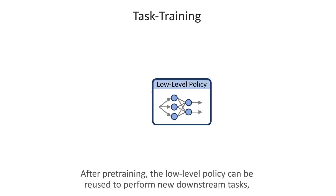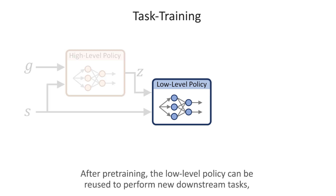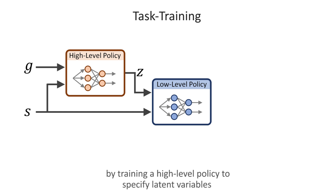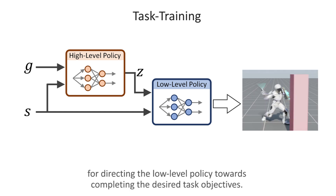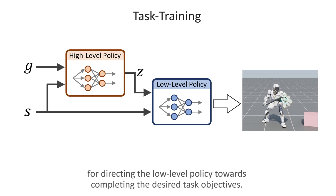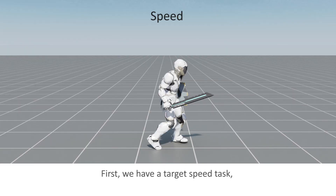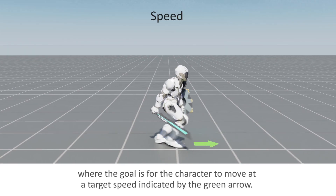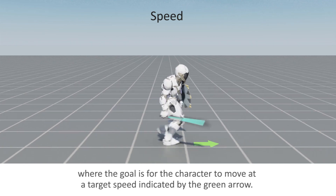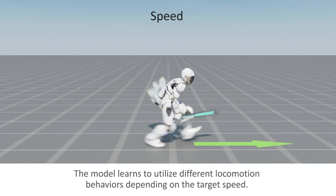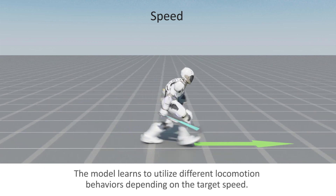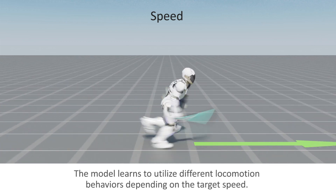After pre-training, the low-level policy can be reused to perform new downstream tasks by training a high-level policy to specify latent variables for directing the low-level policy towards completing the desired task objectives. First, we have a target speed task, where the goal is for the character to move at a target speed indicated by the green arrow. The model learns to utilize different locomotion behaviors depending on the target speed.